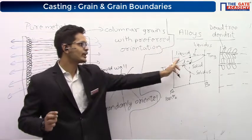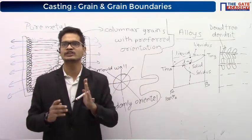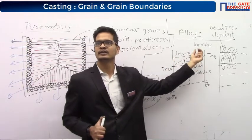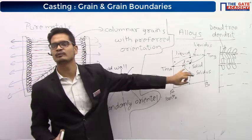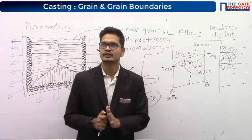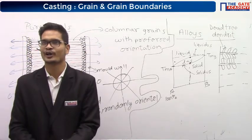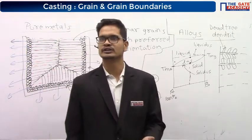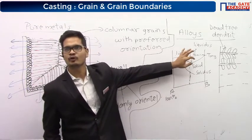In an alloy, the property will not be exactly the same as the parent metal — the property will slightly change. Whichever B particle is present, that particle B will not have exactly the same property as the parent metal. When we make alloys, the properties of the metal change. Why the properties change in more depth will be covered in material science.